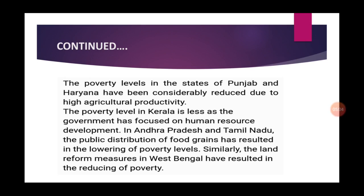In Andhra Pradesh and Tamil Nadu, public distribution of food grains has resulted in lowering of poverty levels. Through the Public Distribution System (PDS), people are getting low-price food grains and other commodities at ration shops, which fulfills their food requirement and plays a vital role in poverty reduction. Similarly, land reform measures in West Bengal have resulted in reducing poverty there.